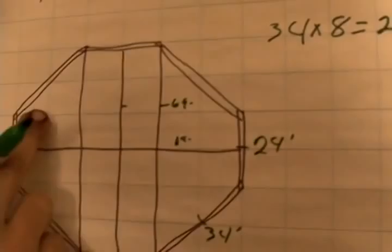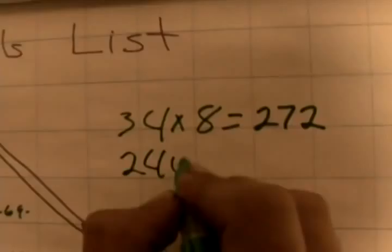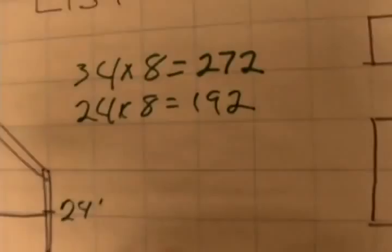Then we'll take our two-foot ones. Remember, we need that for the roof too. We're going to do twenty-four times eight, which equals a hundred and ninety-two.